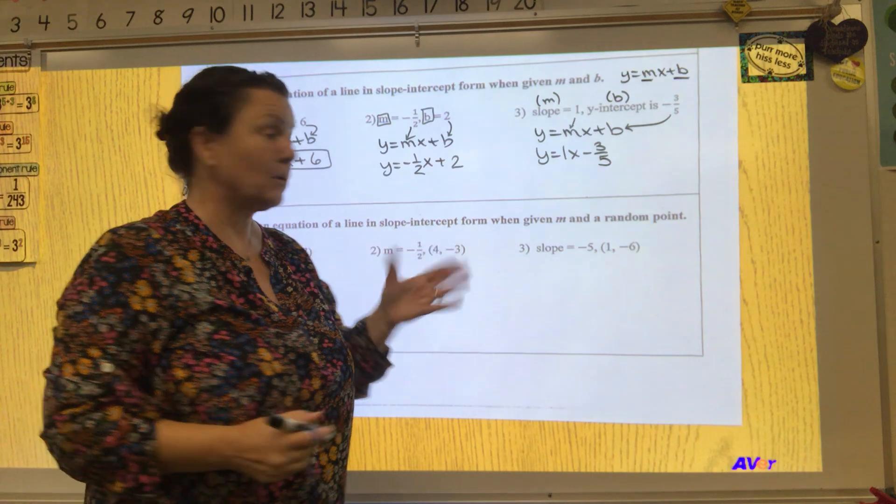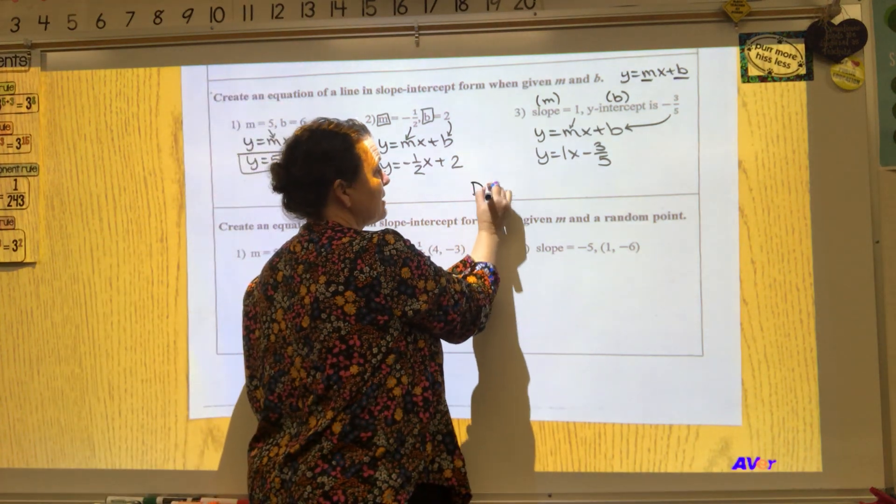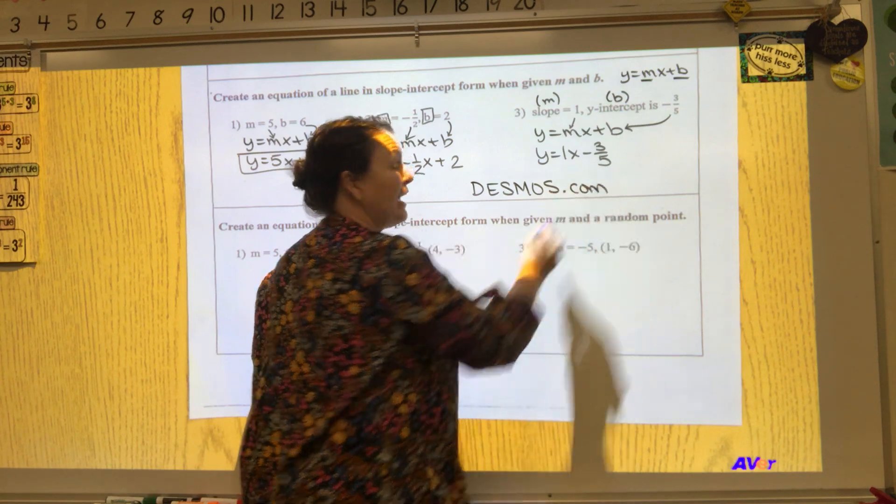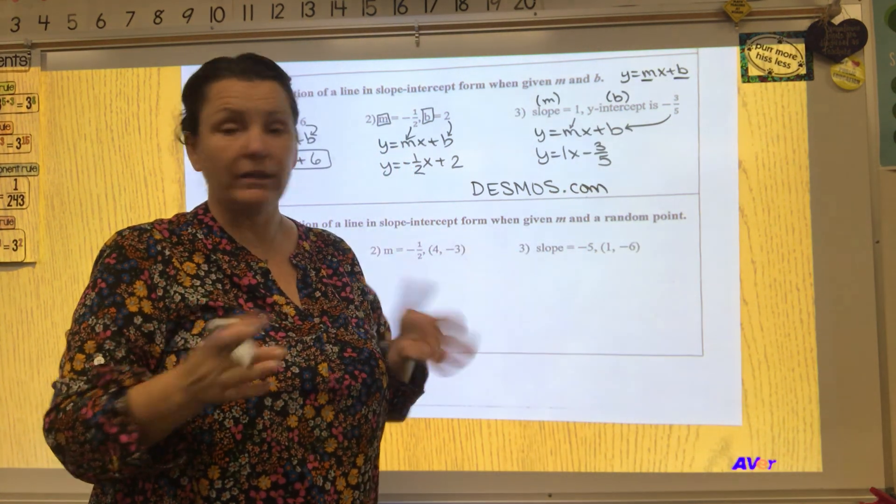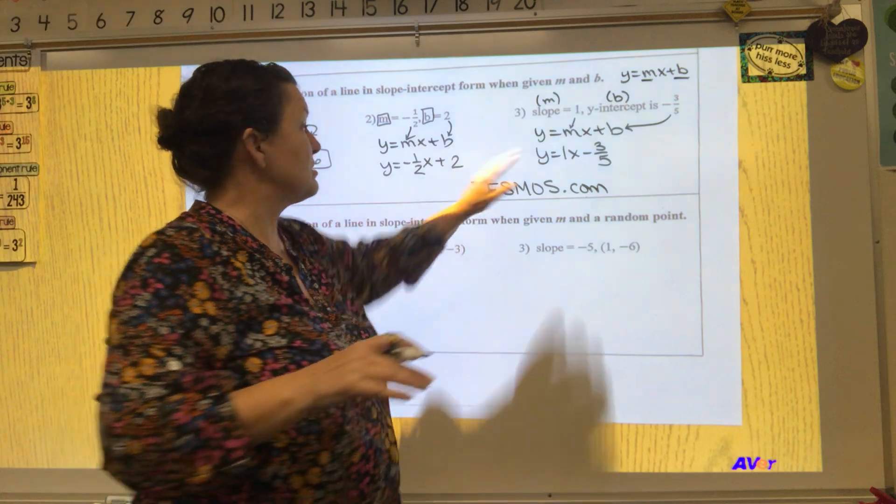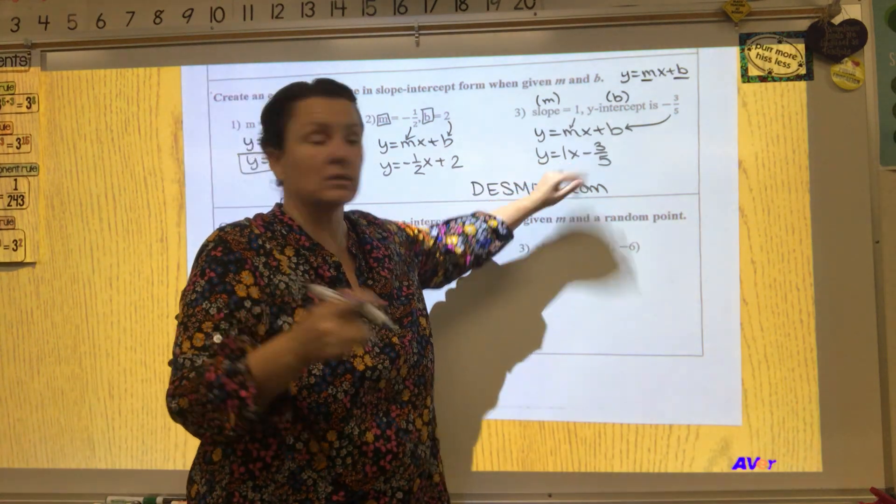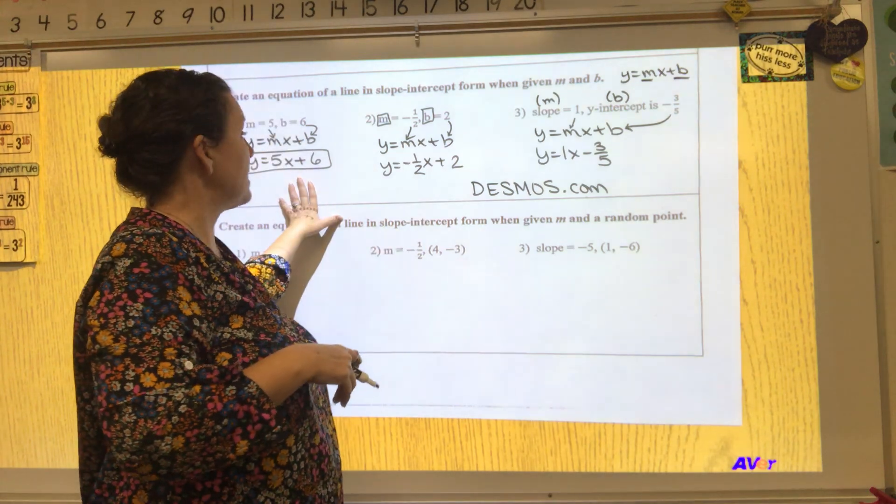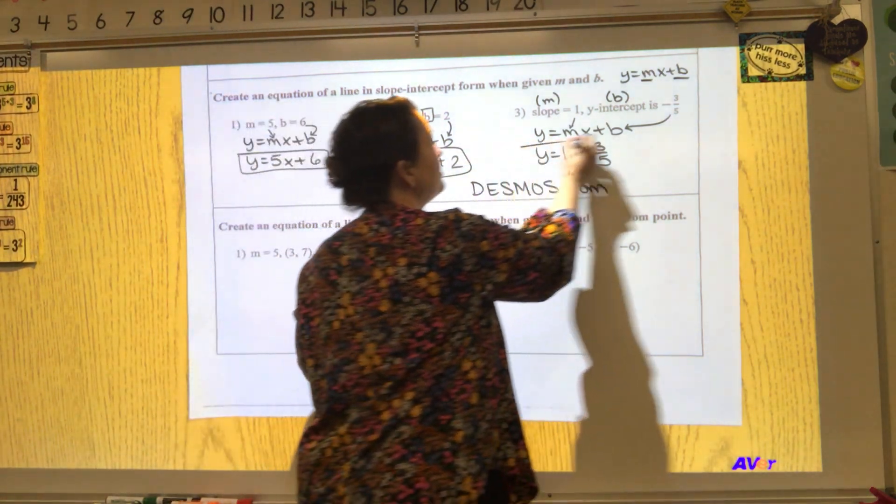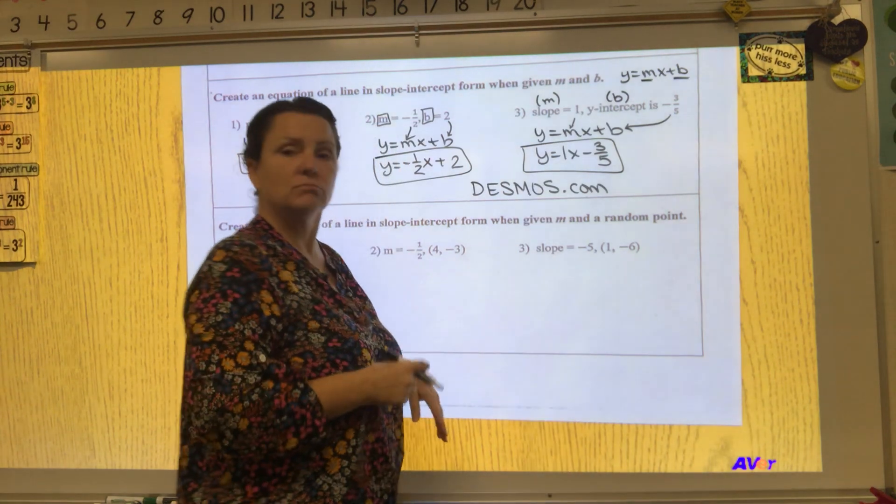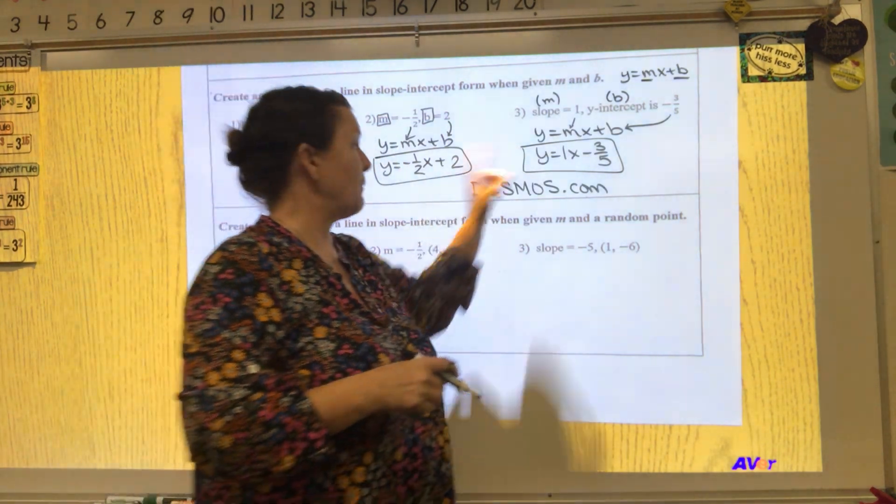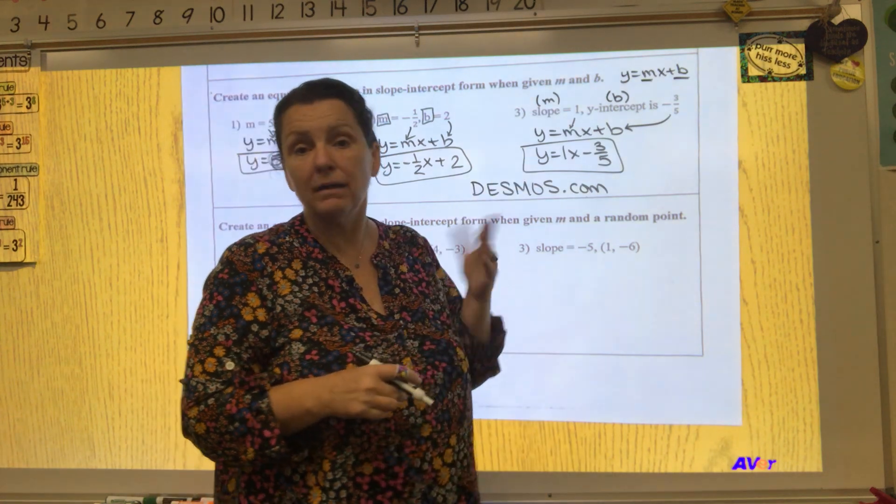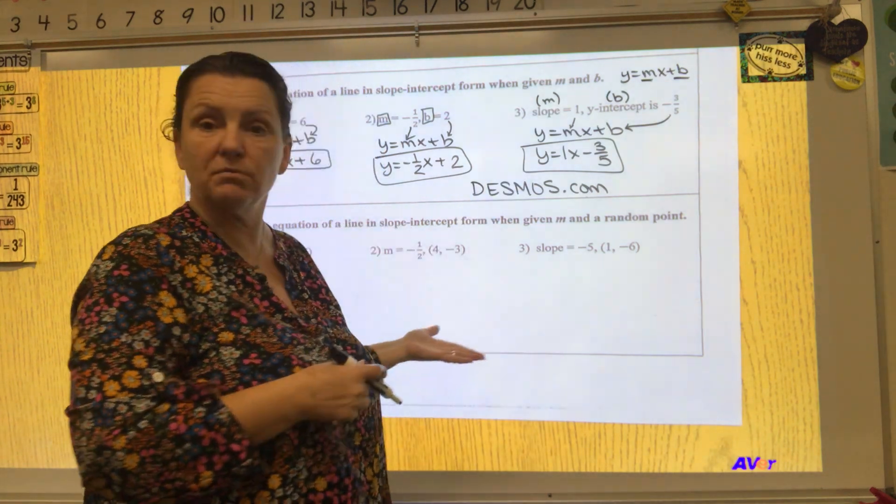You could go to a website called desmos.com and click on graphing calculator. It's absolutely free and you type in that and you can see what the line looks like. Every single one of these is going to form a beautiful straight line. I'll be honest, that one would not be very fun to graph by hand, but it could be done.